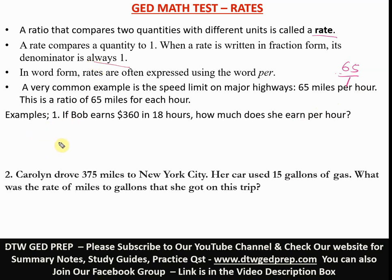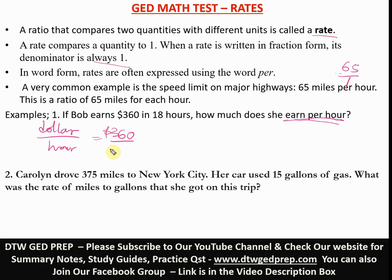Let's look at two examples to explain rates. It says: if Bob earns $360 in 18 hours, how much does she earn per hour? The ratio here is $360 to 18 hours. We just reduce this — 18 goes into 360, and that gives us $20 to 1 hour. So she's going to earn $20 per hour. That is the answer.